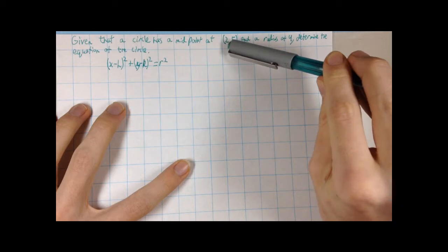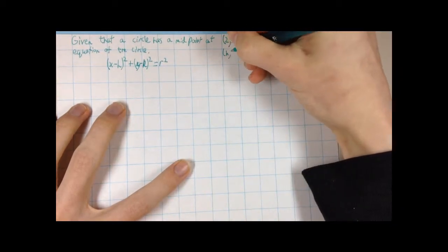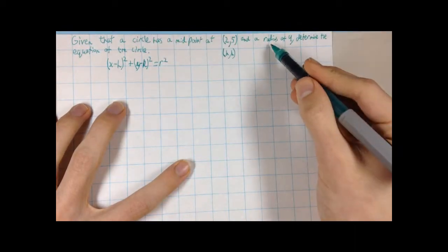So our midpoint (2,5), that is h and k, and then r is the radius.